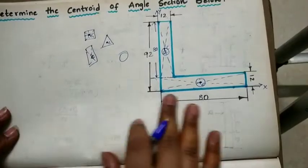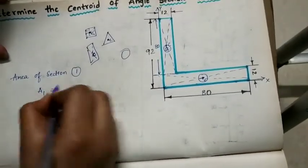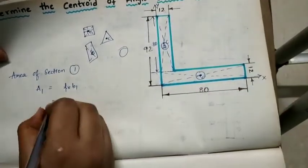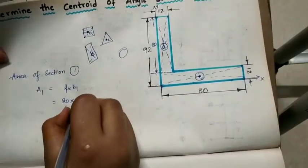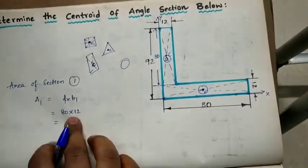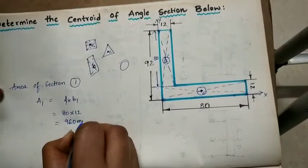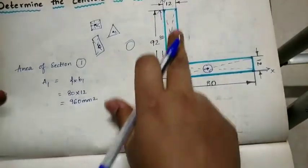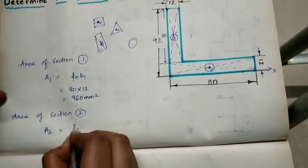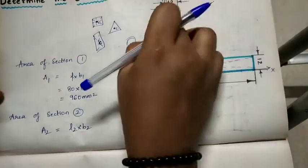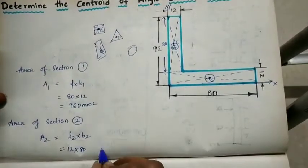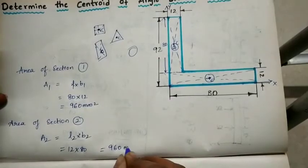Area of Section 1: A1 = L1 × B1 = 80 × 12 = 960 mm². All dimensions are in mm. Area of Section 2: A2 = L2 × B2 = 12 × 80 = 960 mm².